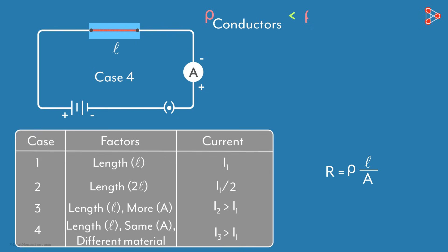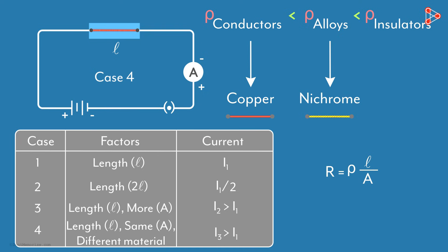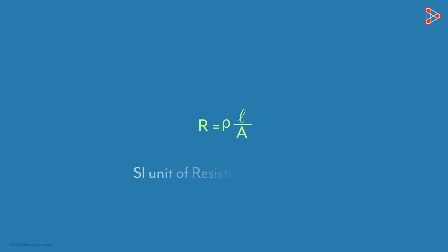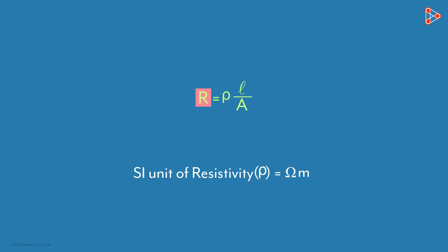Conductors have lesser resistivity compared to alloys, and alloys have lesser resistivity compared to insulators. Nichrome is an alloy, while copper is a metal and a good conductor of electricity — that's why the current reading increased when the material changed to copper. The SI unit of resistivity is ohm-meter. We can look at the formula and deduce it: the unit of resistance is ohm, the unit of length is meters, and that of area is meter squared. Cancelling and transposing the units gives us the SI unit of rho as ohm-meter.